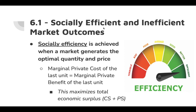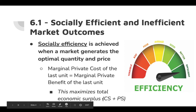Socially efficient and inefficient market outcomes — as you've learned in the past, there are socially optimal market outcomes, allocatively efficient market outcomes, and then the opposite of that. Social efficiency is achieved when a market generates the optimal quantity and price. When this happens, the marginal private cost of the last unit is equal to the marginal private benefit of the last unit consumed, and total economic surplus — consumer surplus plus producer surplus — is maximized.